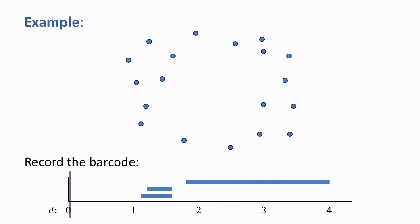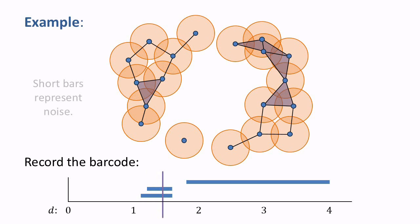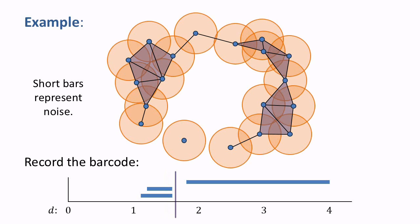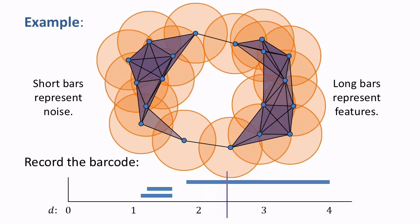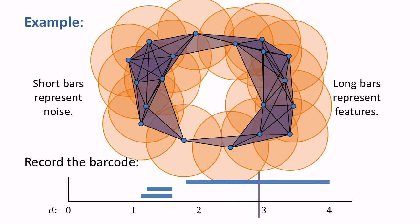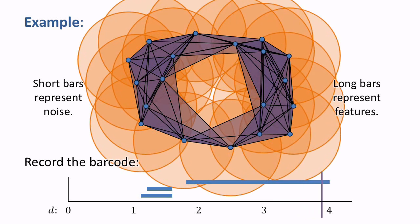Now, rewind the movie and play it again. The small holes that appear first are due to sampling irregularities, or noise, and are represented by short bars in the barcode. The large hole, which we regard as a significant feature of the data, is represented by a long bar in the barcode. This is the general interpretation of barcodes. Short bars represent noise. Long bars represent features.